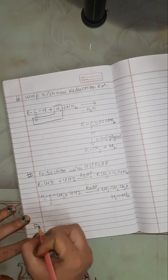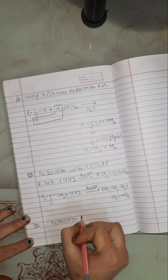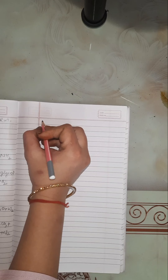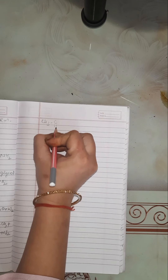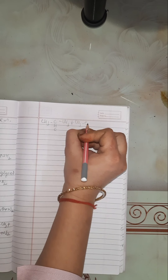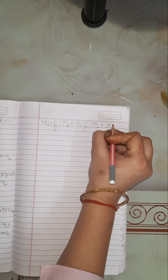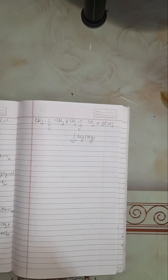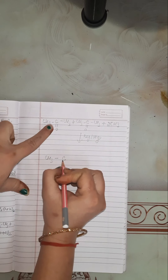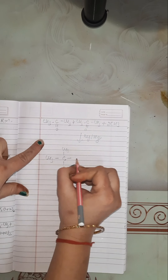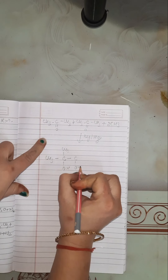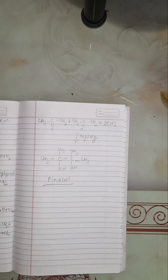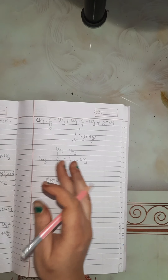Our last reaction is reduction to pinacol. In this, we take two molecules of ketone — CH3-CO-CH3 plus CH3-CO-CH3 — and react with two nascent hydrogens in the presence of magnesium-mercury amalgam. It gives (CH3)2C(OH)-C(OH)(CH3)2, which is known as pinacol. This reaction is only given by ketones.